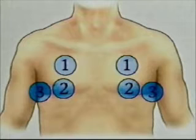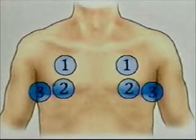Now assess respiratory expansion. Place your thumbs along each costal margin with your hands along the lateral ribcage. Raise loose skin folds between your thumbs and ask the patient to take a deep breath. Observe the displacement of your thumbs and feel for the range and symmetry of movement as the patient exhales fully. Next, following this pattern, palpate for tactile fremitus. As the patient repeats 99, use the ball of your hand to compare symmetrical areas. Because fremitus is difficult to feel through the breast tissue of women, you may need to gently displace the breast.